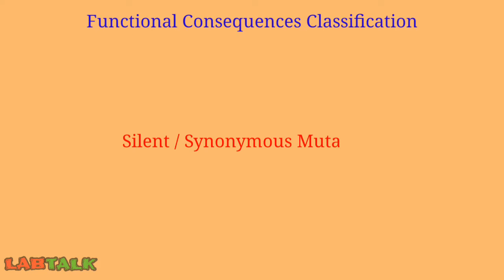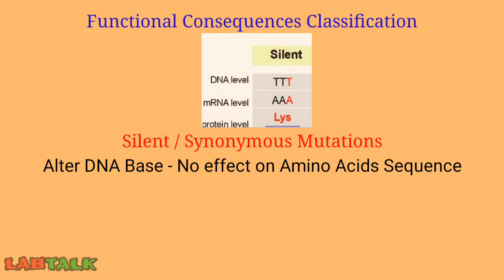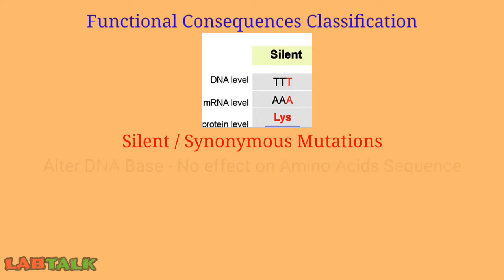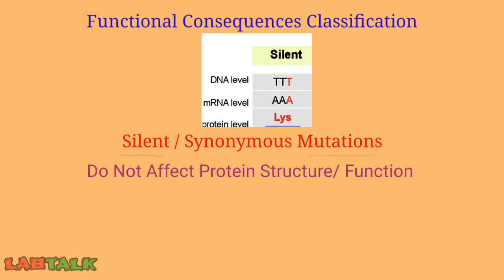The first type is silent or synonymous mutations. These are mutations that alter the DNA base but have no effect on the sequence of amino acids in the protein. These mutations are considered silent because they do not affect the structure or function of the protein, as there is no change in the amino acid sequence.